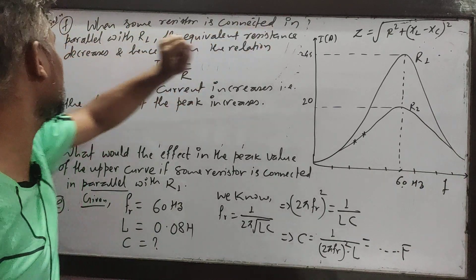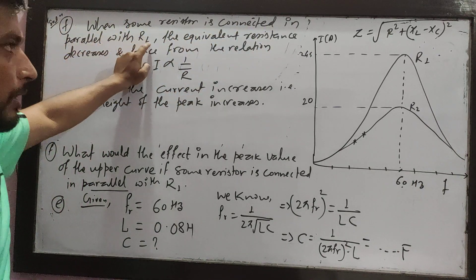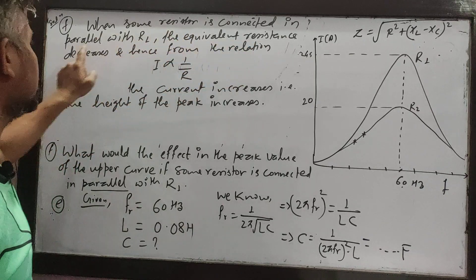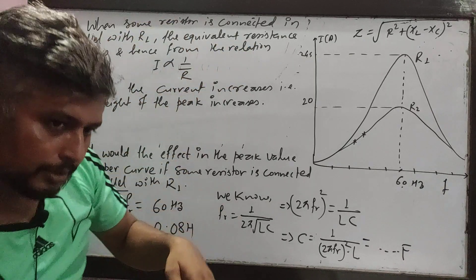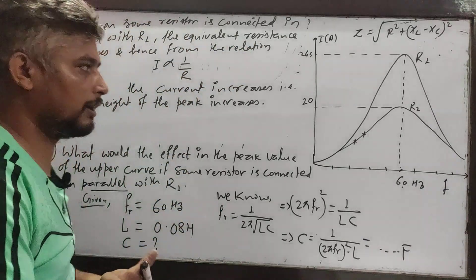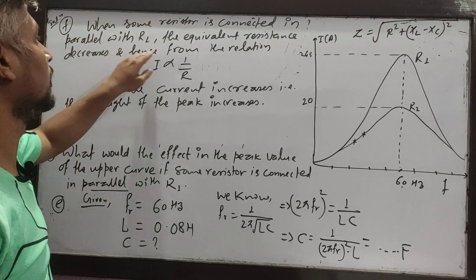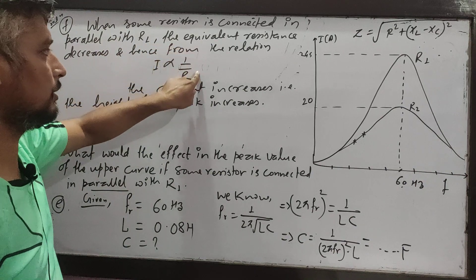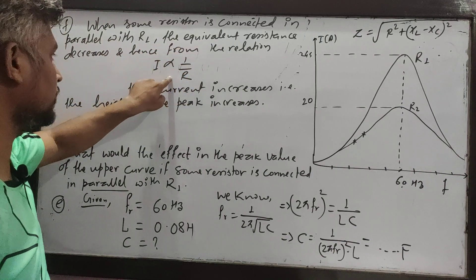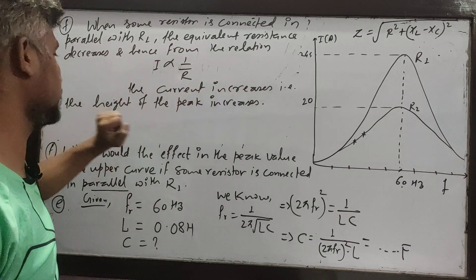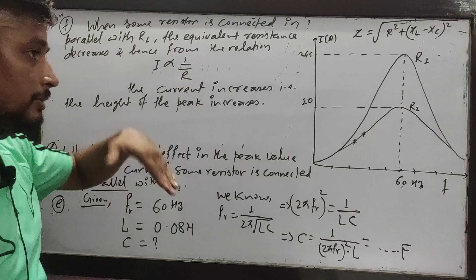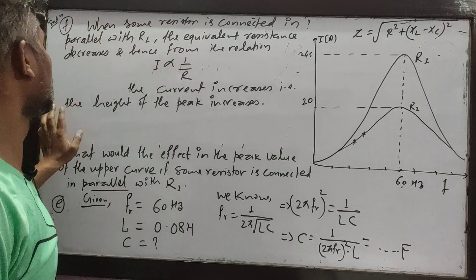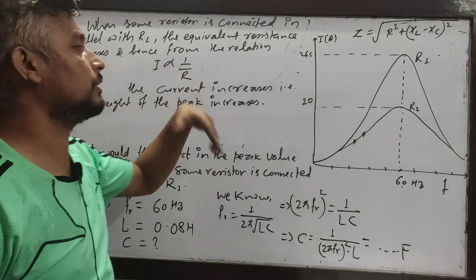In simple language: when some resistor is connected in parallel with R1, the equivalent resistance decreases. From the inverse relation between current and resistance, the current increases because resistance decreased. Therefore, the height of the peak increases.